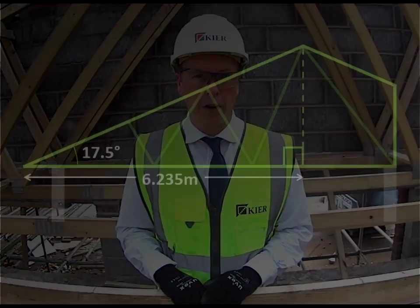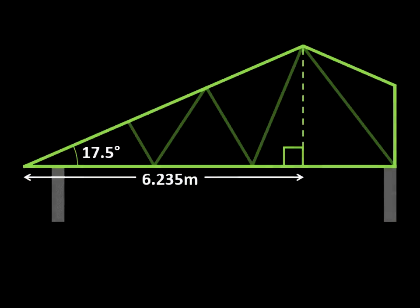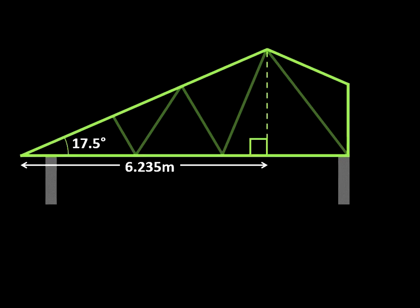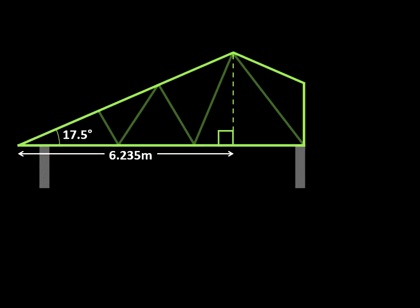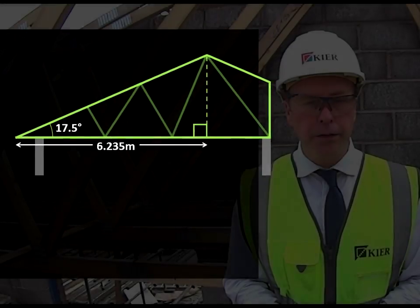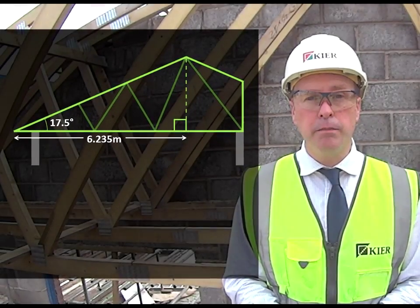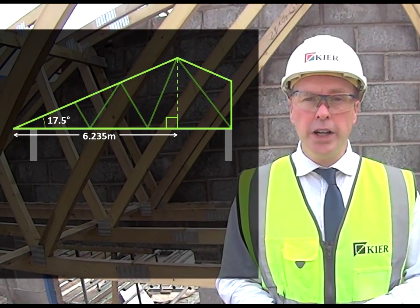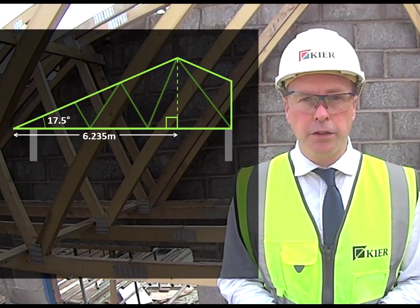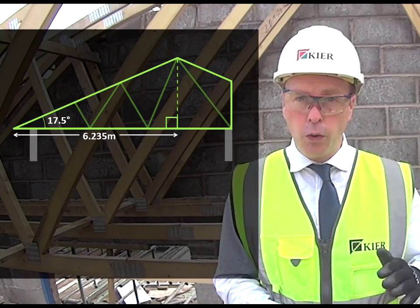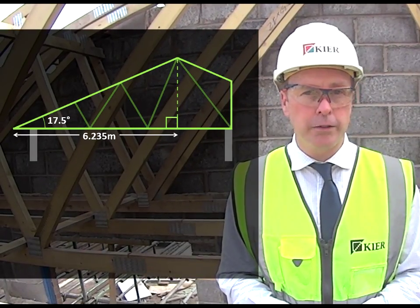Here is the design of the roof trusses that are being used to create our new teaching block. As you can see, the angle required for the roof is 17.5 degrees, and that's really important because the rain needs to flow off the roof at the right rate.